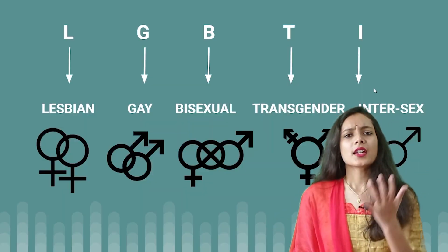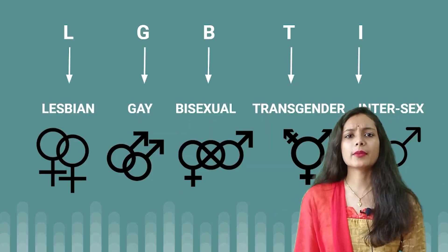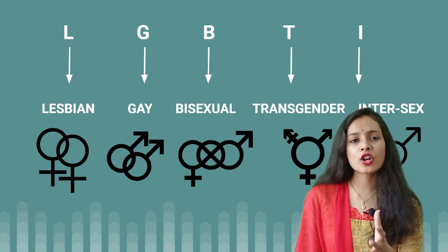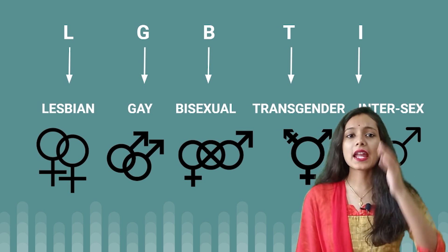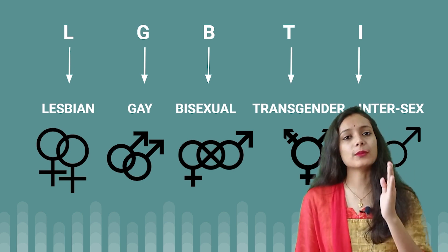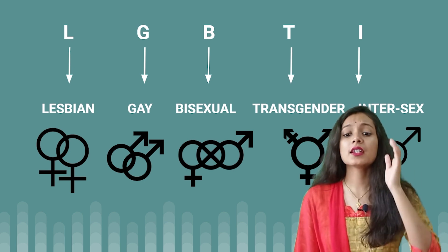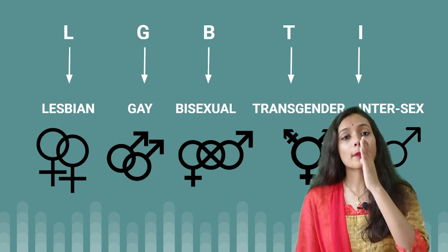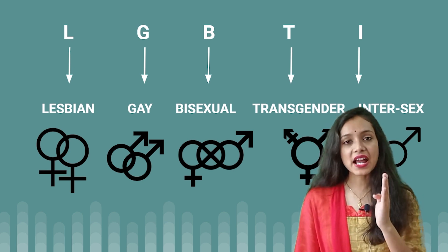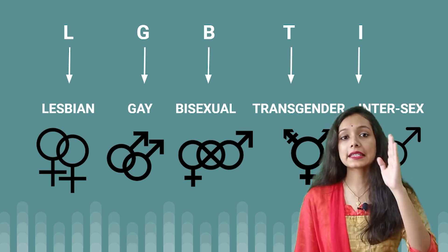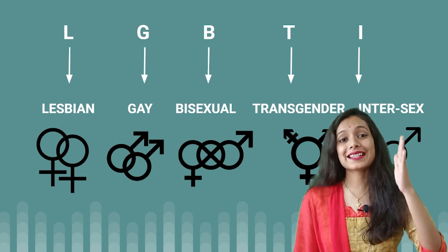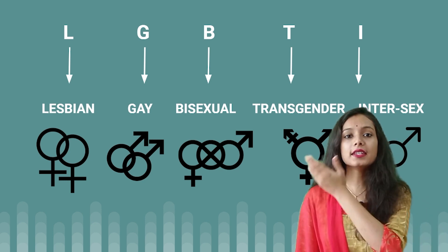LGBTI — what does it mean? The full form is very simple. L means lesbian, G is gay, B is bisexual, T is transgender, and I is intersex.